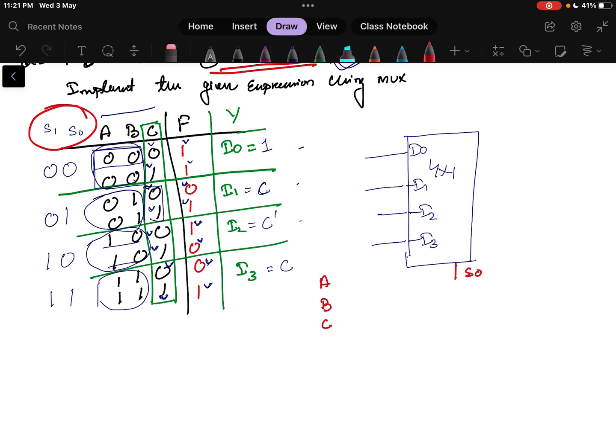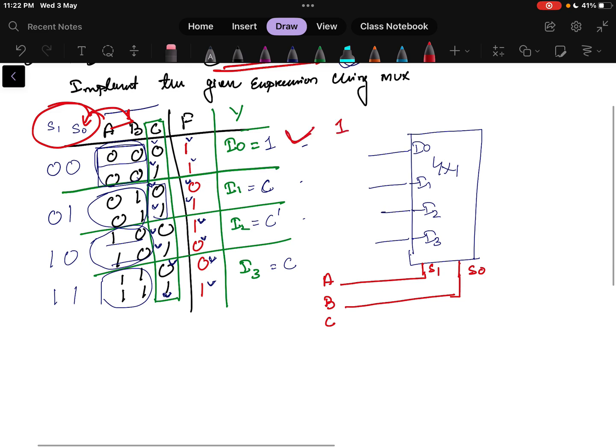To the selection line S0 and S1 it is taken as A and B. S0 becomes B here, so S0 will be connected to B. And S1 will be connected to A. Where the C will be connected? See here I0 value equals 1, so take one variable 1 and connect that to I0. Then I1 equals C, so I1 will be connected to C variable. Next is I2 equals C dash, so for that I need C and then put a NOT gate here, this will be connected to I2. And I3 equals C, so C is already here just connected and the output equals Y.